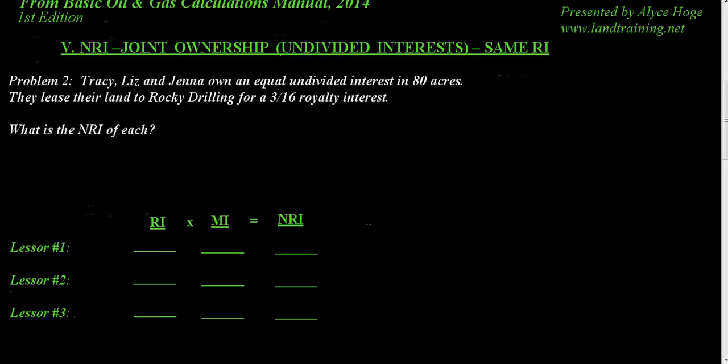In problem two, when we're dealing with joint ownership or undivided interest with the same royalty interest, let's look at the problem. It says Tracy, Liz, and Jenna own an equal undivided interest in 80 acres.